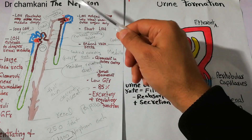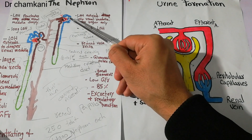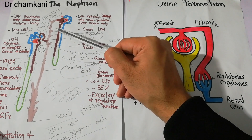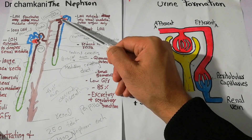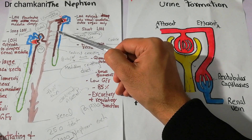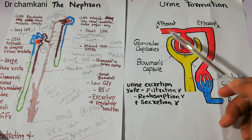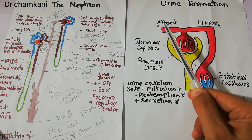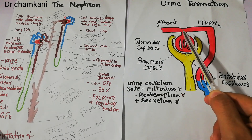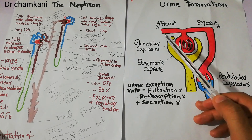Basically blood is coming through the afferent arteriole, it is filtered here, and then the blood goes through the efferent arterioles and the filtrate moves through all the tubules. The blood is entering through the afferent arterioles, coming into the glomerulus which is a bunch of capillaries.